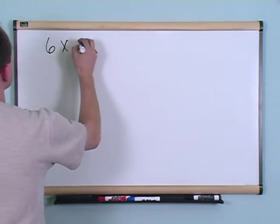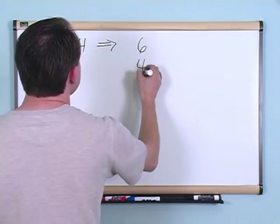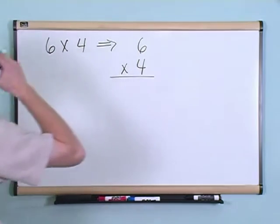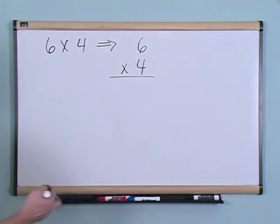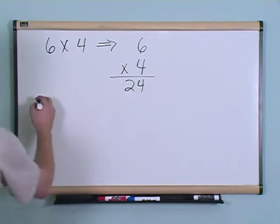Again, 6 times 4. You should know what that is. I'm going to write it on top of each other with a multiplication symbol. 6 times 4, you should remember from your times tables, is 24. I'm just going to write that down. 6 times 4 is 24.